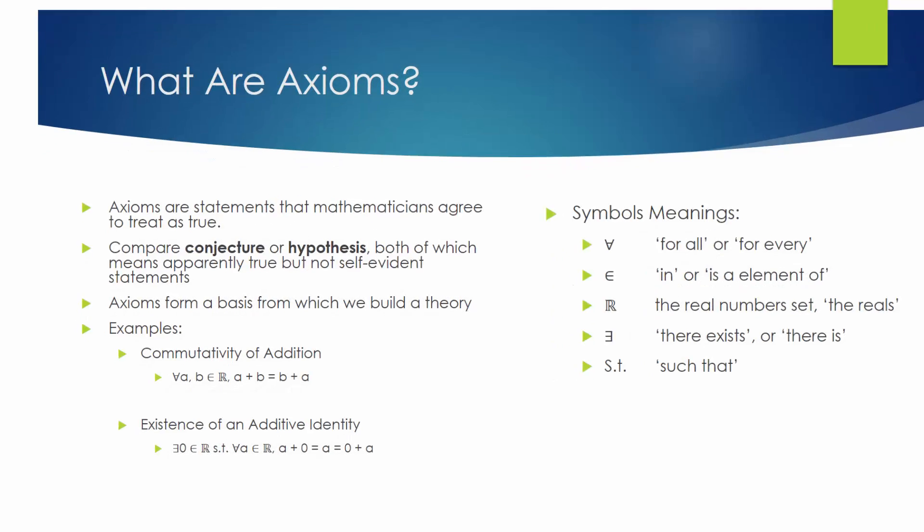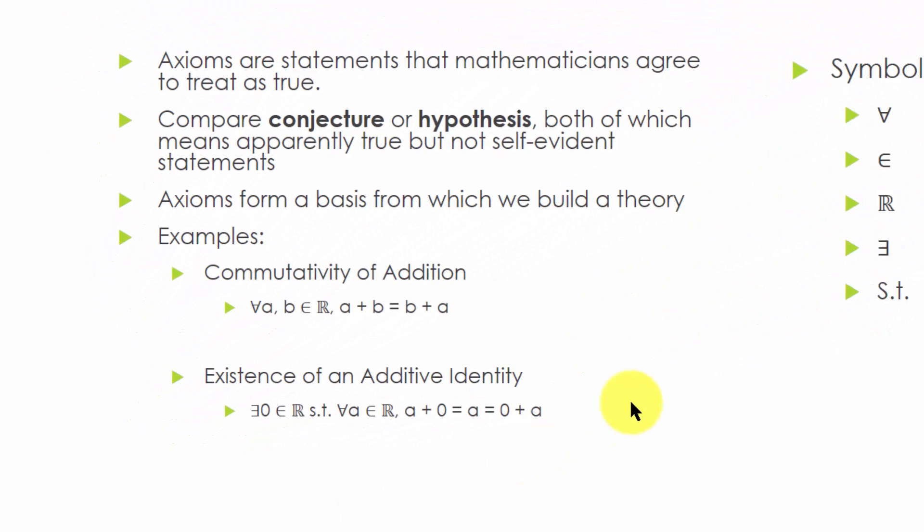So what exactly are axioms? Axioms are statements that we intuitively found to be true, a statement or proposition that is regarded as being established, accepted, or self-evidently true without proof.